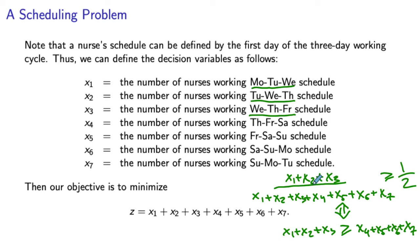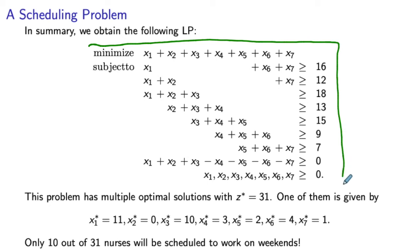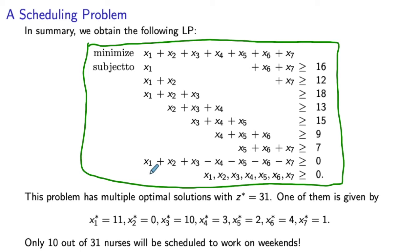In summary, we have a model with a constraint for every day of the week, plus the constraint ensuring that not too many nurses work during the weekends. If we feed it to a solver, we find that the optimal objective value is 31, and one of the optimal solutions is given here.